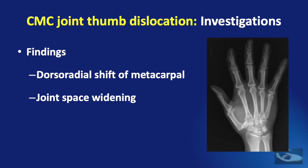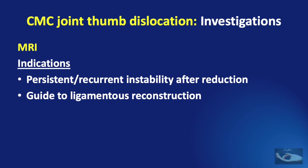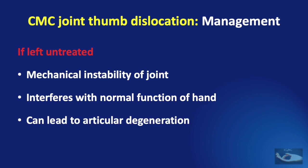The classical findings on x-ray are dorsoradial shift of the metacarpal base and sometimes joint space widening. MRI is also indicated, particularly in situations of persistent or recurrent instability after reduction, and serves as a guide to ligamentous reconstruction. If dislocations are left untreated, they lead to mechanical instability, interference with normal hand function, and articular degeneration.